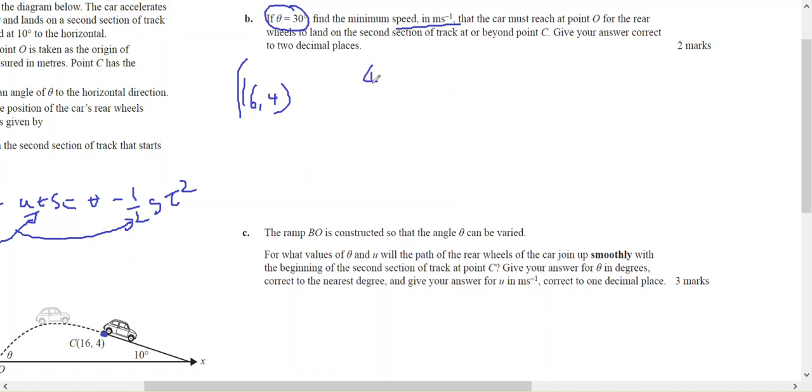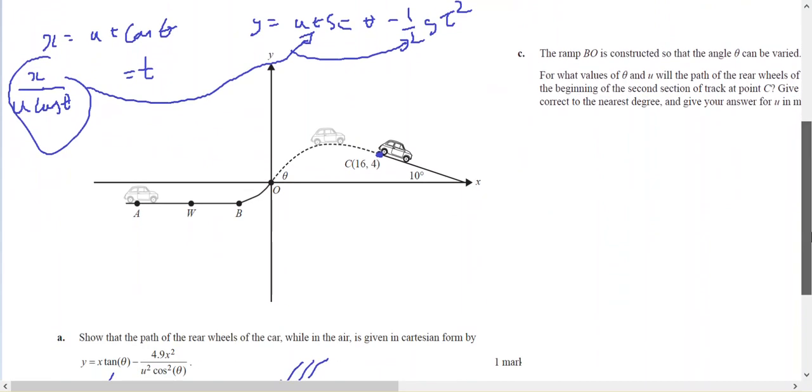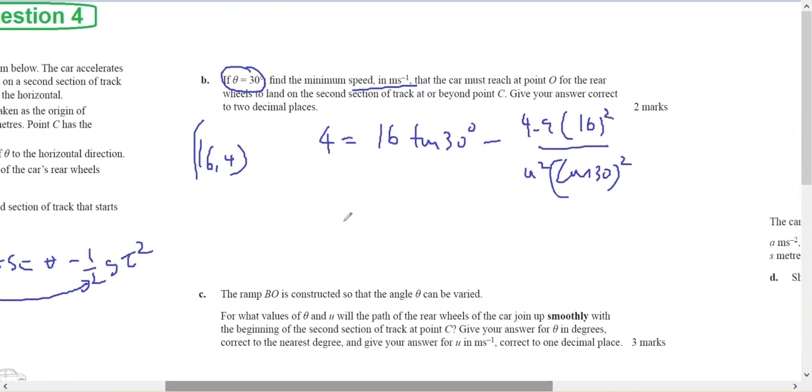So 4 equals 16 tan 30 degrees minus 4.9 times 16 squared over u squared cos 30 degrees squared. So subbing into the rule that they've given me, which is this rule here. And on a calculator that gives, solve for u when I get 17.8698, so u equals 17.87 meters per second.